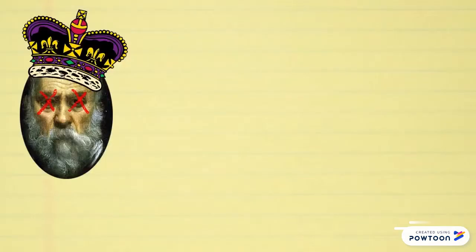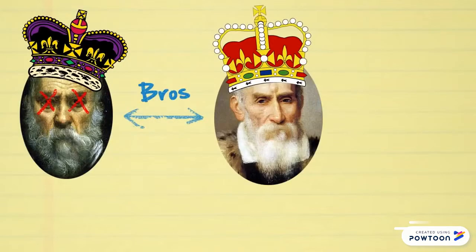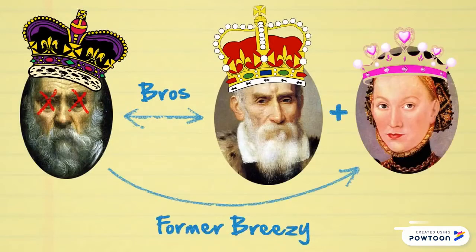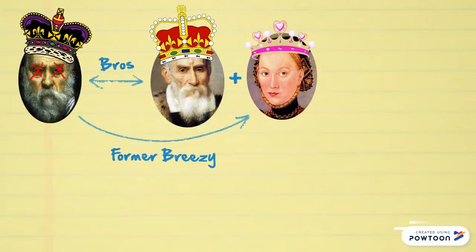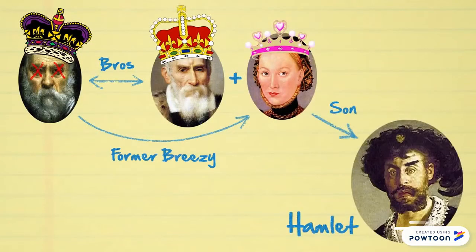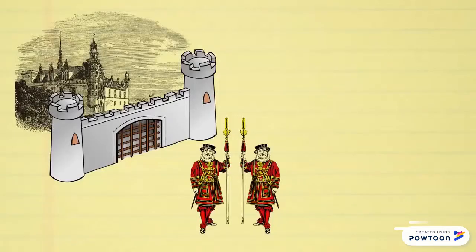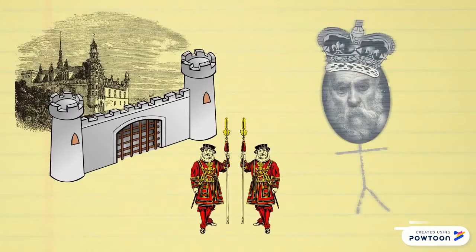The shit's goin' whack up in the kingdom of Elsinore. The old king's brother Claudius goin' and married the king's old breezy Gertrude. And Queen Gertrude's son Hamlet gettin' all clunk since his mom actin' like a hoe. Things get straight stupid with some guards peep the ghost of ol' king Hamlet creepin' on the castle.